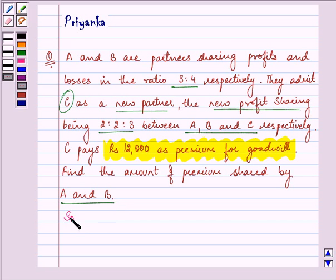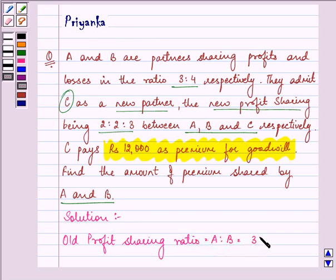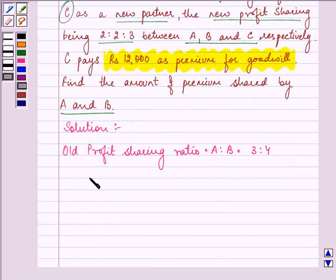So let us proceed with the solution. First of all, the old profit sharing ratio that was between A and B is given to us as 3 is to 4. Whereas new profit sharing ratio between A, B and C is given to us as 2 is to 2 is to 3.